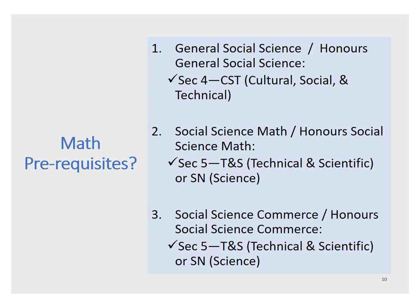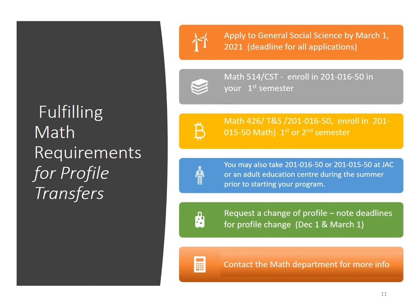To answer a frequently asked question: the math prerequisite for the General Social Science profile is CST. For the Social Science with Math profile or Commerce profile, the math prerequisite is TNS or SN. If you decide to transfer to a profile that requires a higher math level, you will need to make up your deficiency, and as shown, there is more than one way you could do so.